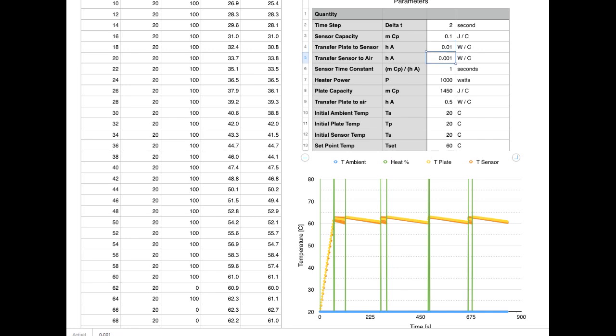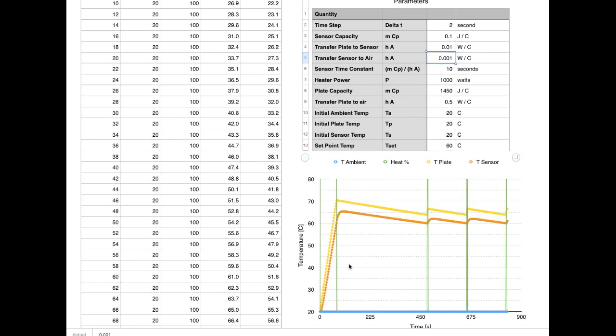Switching that back to where I had it, which I think is a reasonable value, we see that the plate temperature is getting up fairly high, up to 70 degrees Celsius, even though our target was to only get it to 60 degrees Celsius. That's because the sensor never quite catches up with the plate.